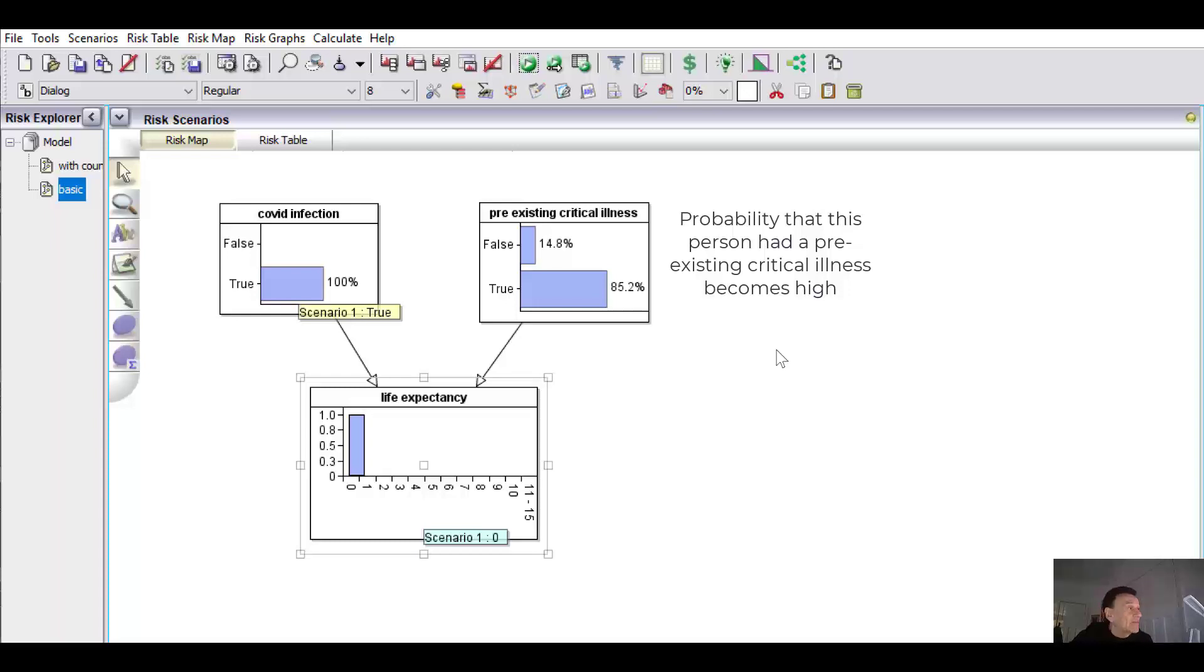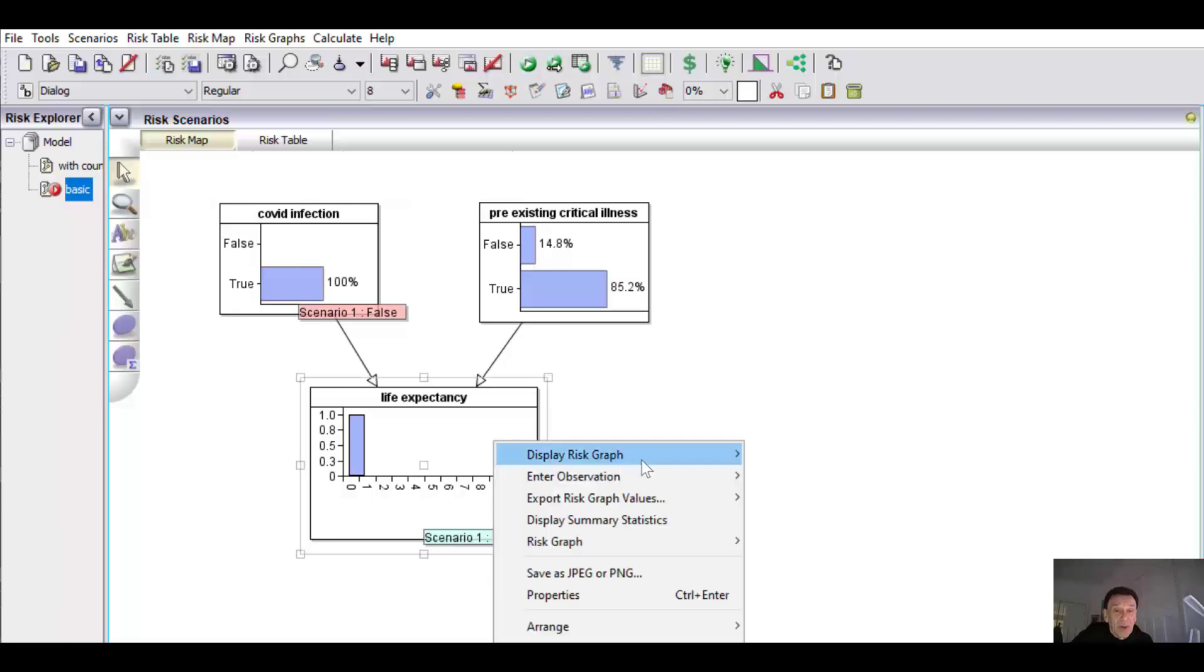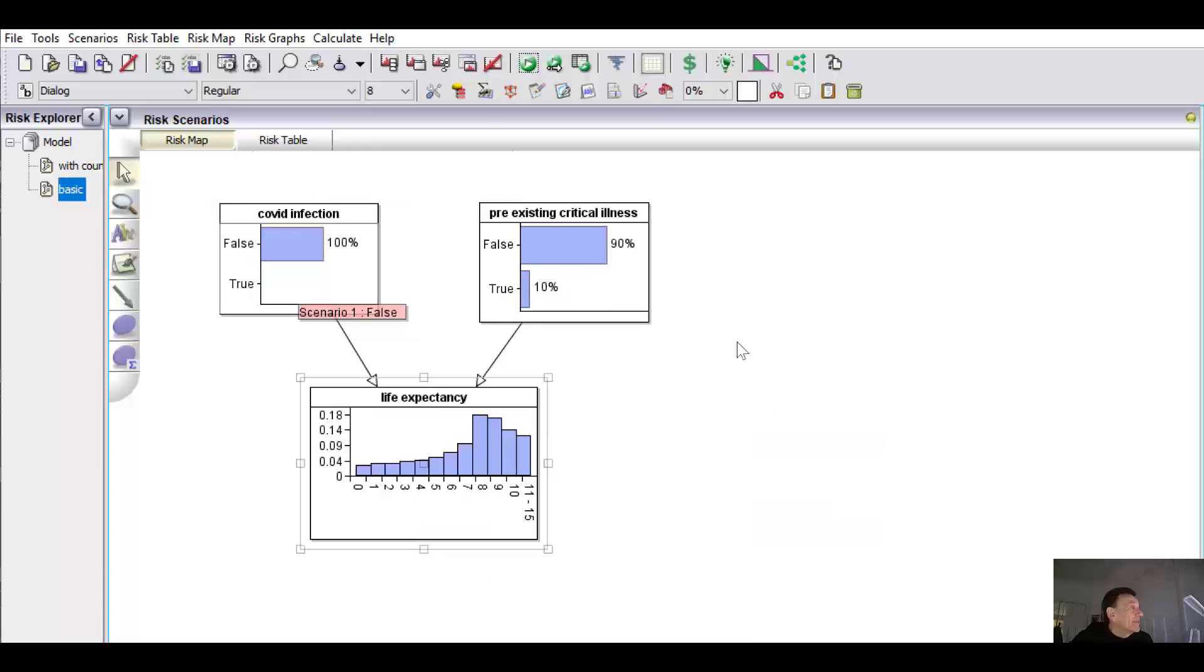world where he's not infected with Covid. Now we can't do that in this model because as soon as we reset Covid infection to false and remove the observation that person died shortly afterwards, then we've lost the information about the probability that he has a pre-existing illness.